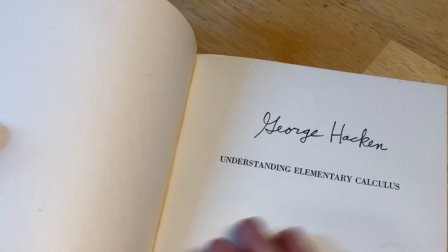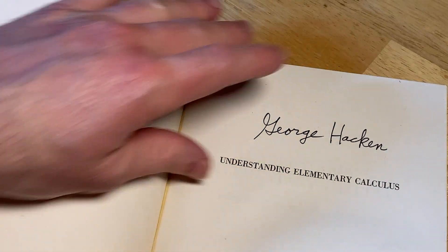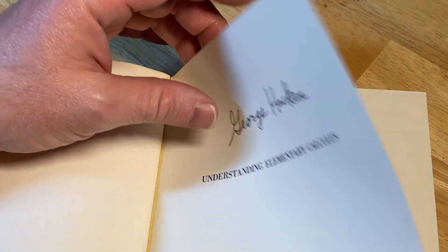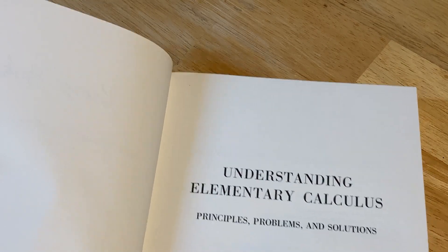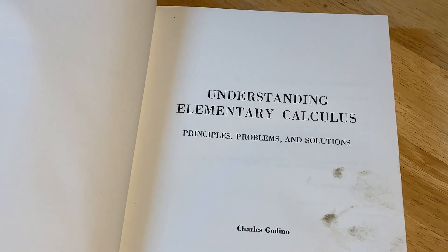It's been signed by George Hacken, whoever that is. Understanding Elementary Calculus, Principles, Problems, and Solutions, Charles Godino, Brooklyn College, 1969.